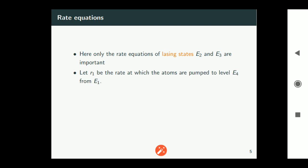Let r1 be the rate at which the atoms are pumped to level e4 from e1. Then these atoms will make a quick non-radiative transition to e3. But what is important to understand here that the r1 now represents the rate at which the atoms are being populated at e3. So that r1 now becomes an important parameter.